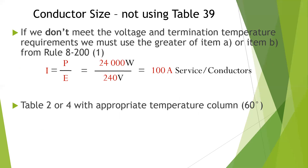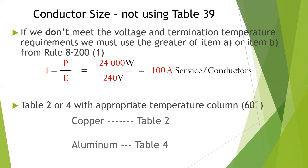If we were to figure out the conductor size not using Table 39 — so if we don't meet the voltage and termination temperature requirements — we must use the greater of item A or B. Since B was our greater value, we have 100-amp service conductors, then we go to Table 2 or 4 with the appropriate temperature column, which would be 60 degrees. That would give us a number one or a 1/0 for aluminum. That is how you would find your service conductor size given the information already discovered from our calculations.